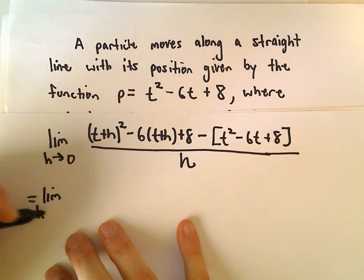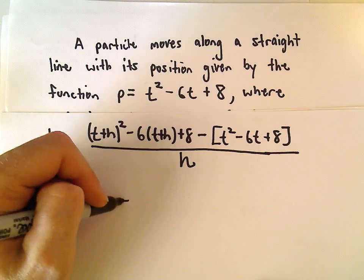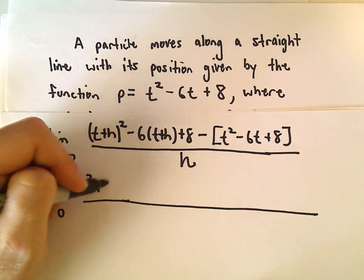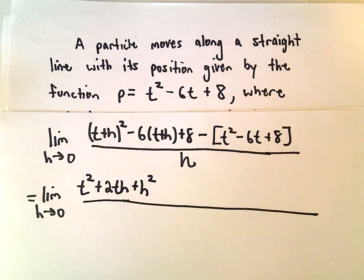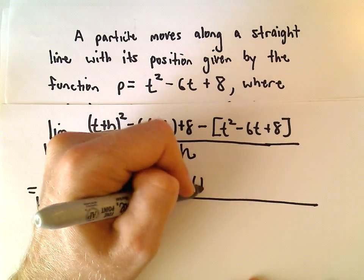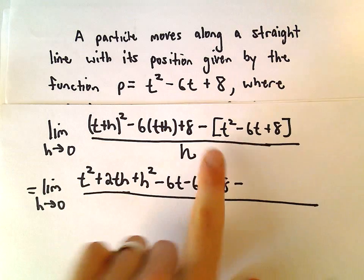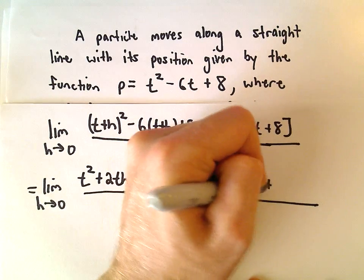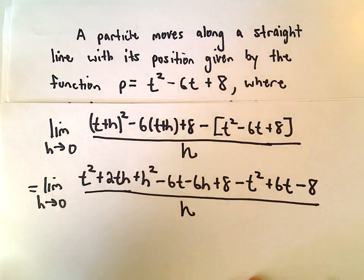So it's just a matter now of expanding the numerator and collecting like terms. So t plus h squared, that's going to be t squared plus 2t times h plus h squared, and then we'll get negative 6t minus 6h when we distribute, plus 8, and then when we distribute our negative sign, we'll have negative t squared plus 6t minus 8, all over h.